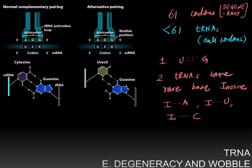To summarize, degeneracy is the fact that there are 61 codons for 20 amino acids. So many amino acids are coded for by more than one codon. However, this is achieved without having 61 anticodons. There are fewer than 61 tRNAs.